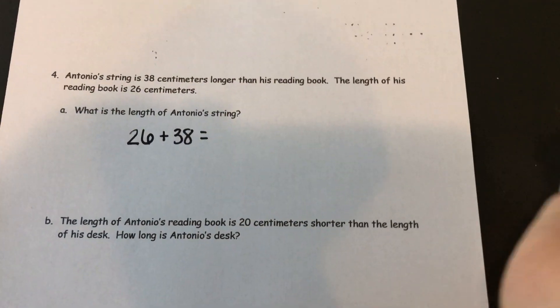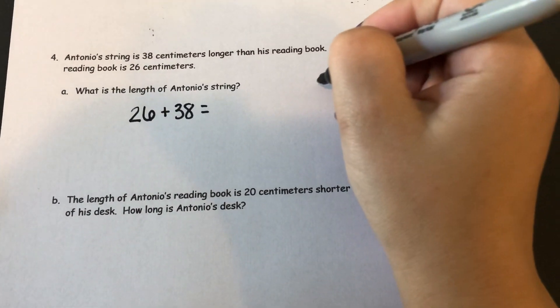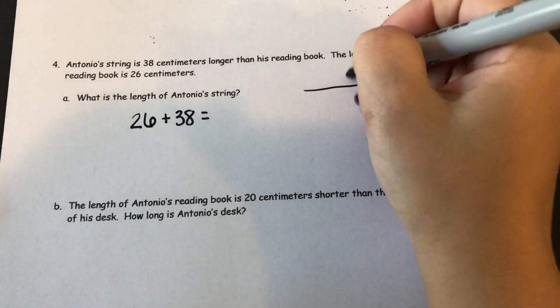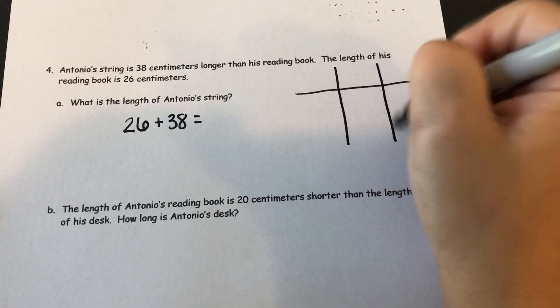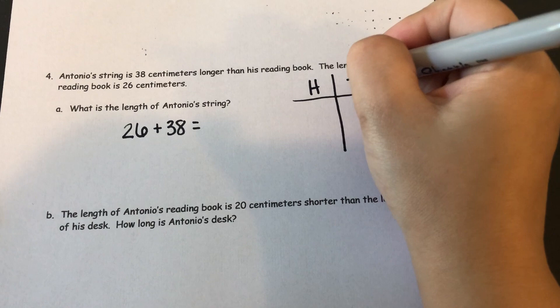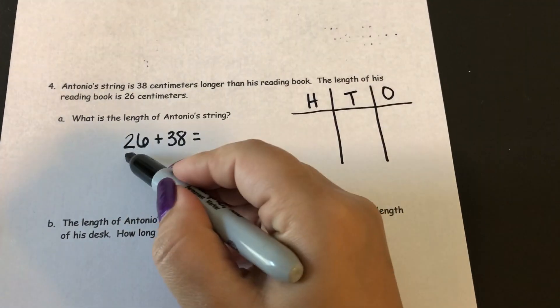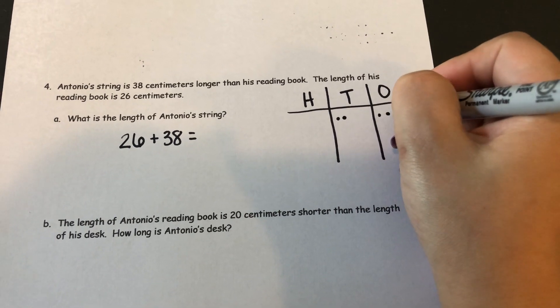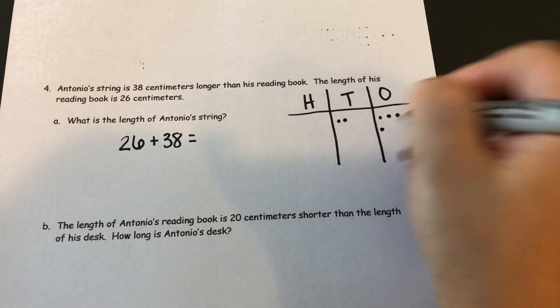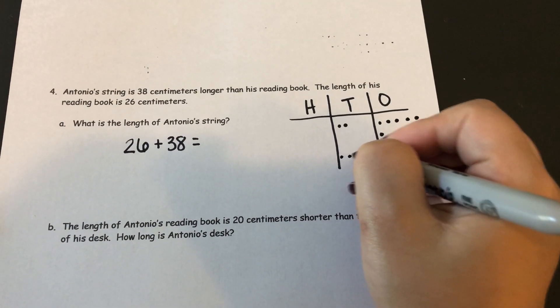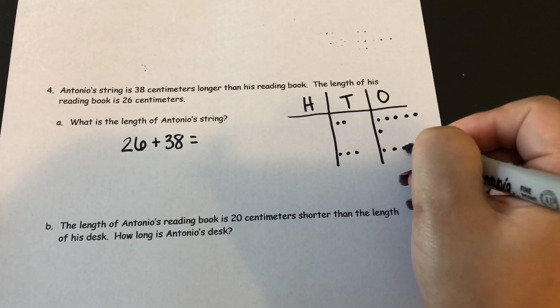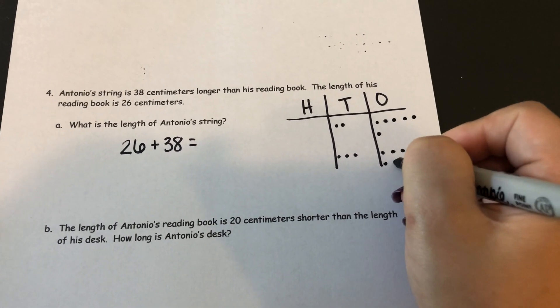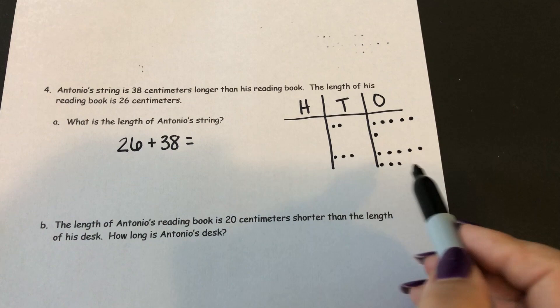Let's go ahead and draw a place value chart for this strategy. You could also do the vertical form, that would be fine too. But you definitely want to use a strategy for this. 26 looks like 2 tens and 6 ones. And 38 is 3 tens 8 ones.